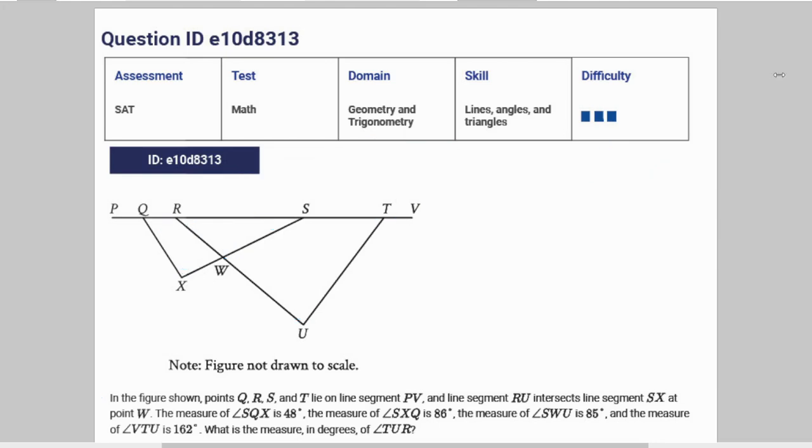Now we're given the following information: in the figure shown, points Q, R, S, and T lie on line segment PV. So this entire first sentence is kind of pointless because it doesn't tell you anything that you can't see visually in this image right here.